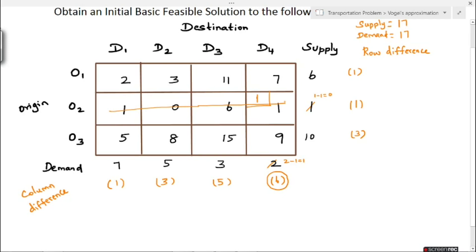Again we find the row and column differences with the remaining values. In the first row we have 2, 3, 11, and 7 — the least values are 2 and 3, so the difference is 1. The second row is fully cancelled, so there is no difference. In the last row the least values are 5 and 8, so the difference is 3. For column differences: first column has values 2 and 5, so 5 minus 2 = 3.